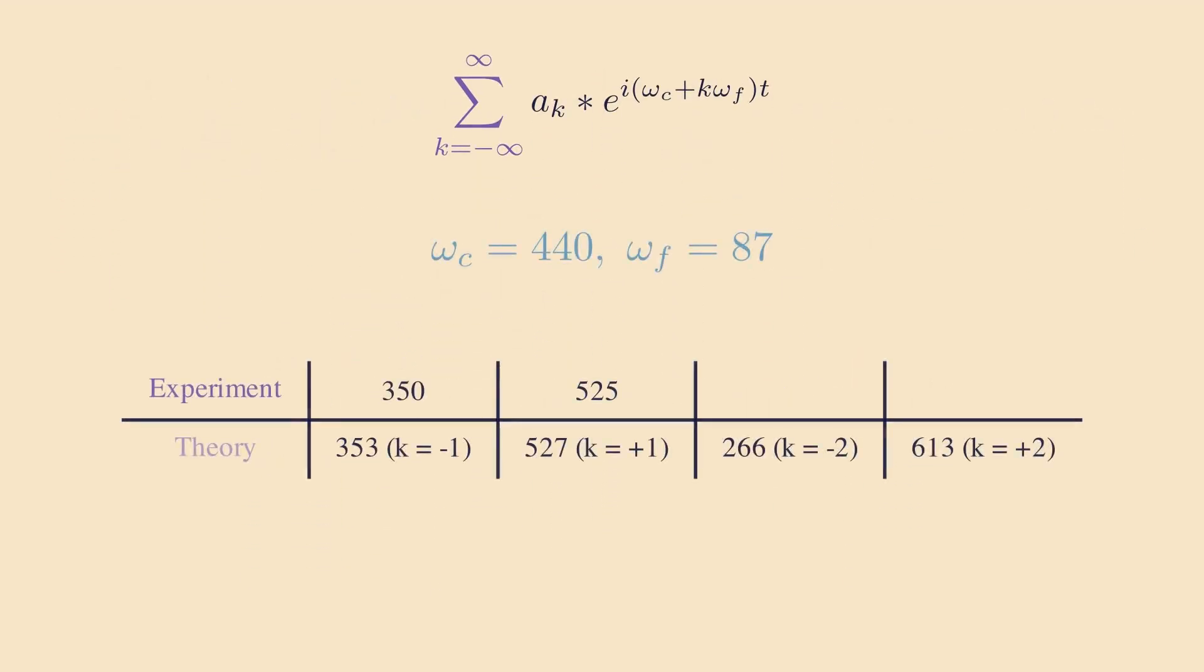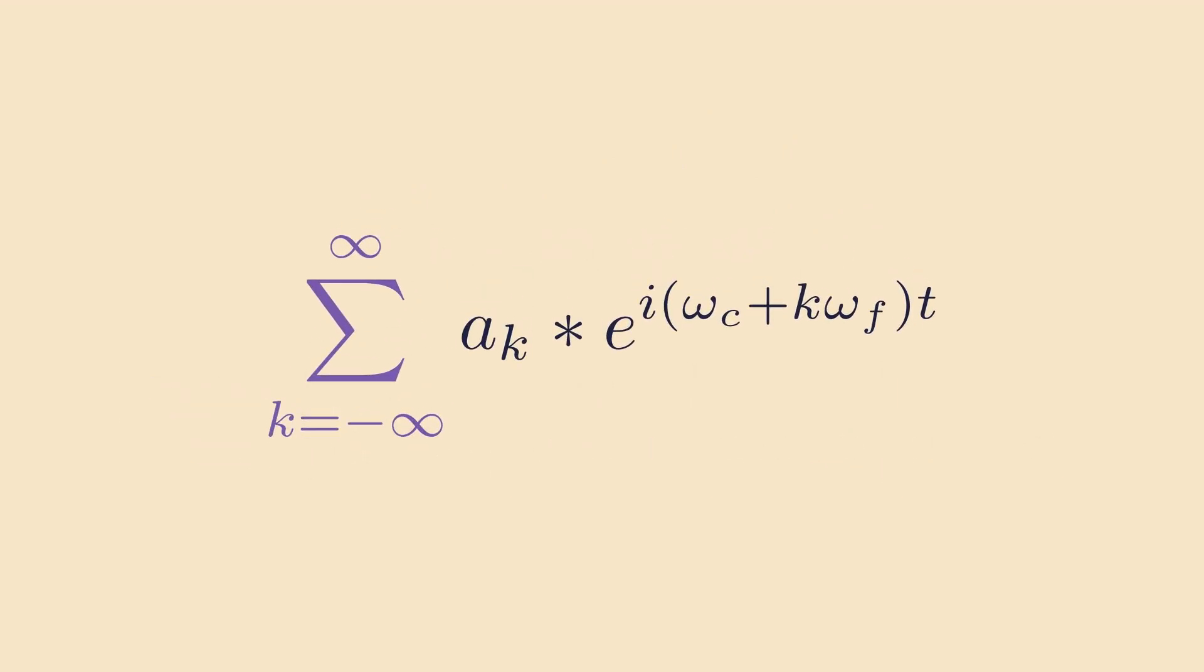Plugging in some numbers, we can see we get spikes at exactly where we experimentally predicted earlier. Our experiment determined 350 hertz. Plugging in k equals negative one, we get 353, which is very close. Plugging in k equals positive one, we get 527, very close to 525 from our experiment. Usually we do experiments to confirm our theories, but in this case, our theory confirmed our experiment.